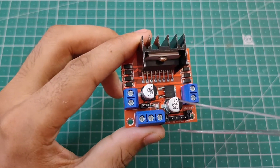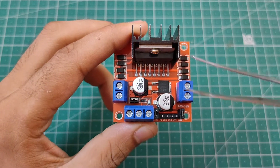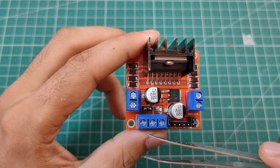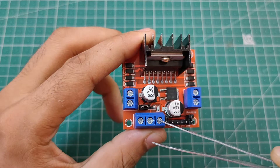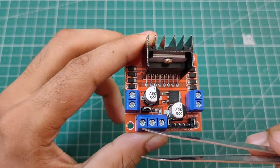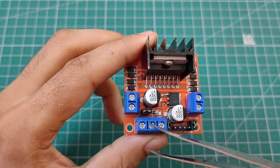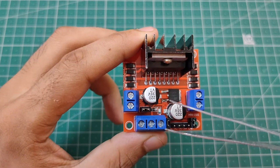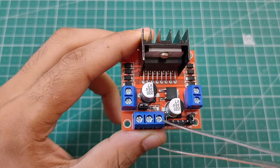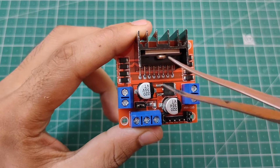Now, how do we power this motor driver? We can control motors ranging from 5 volts to 35 volts using this driver. To power it we use three pins: the leftmost pin is labeled 12V, the middle one is Ground, and the rightmost is labeled 5V. You don't need to give only 12 volts to that 12V pin. If you give between 7 and 12 volts on the leftmost pin and Ground on the middle pin, the motor driver's built-in 5V voltage regulator will convert that voltage to 5V, and you will get that 5V output from the rightmost pin. That 5V also powers the IC of the motor driver.